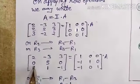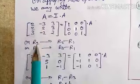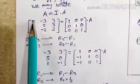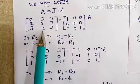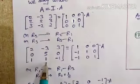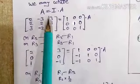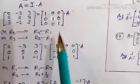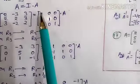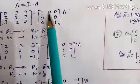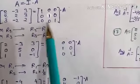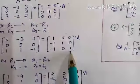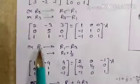For R2 minus R1: the result is minus 1, minus 1, and 2 minus 3 gives minus 1. On the identity matrix side, the first row stays as it is. For R2 minus R1: 0 minus 1 is minus 1, 1 minus 0 is 1, and 0 minus 0 is 0. For R3 minus R1: 0 minus 1 is minus 1, 0 minus 0 is 0, and 1 minus 0 is 1.